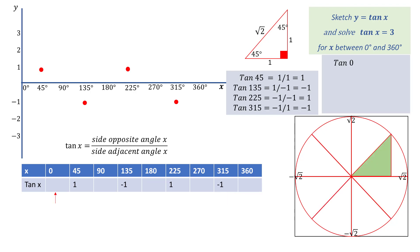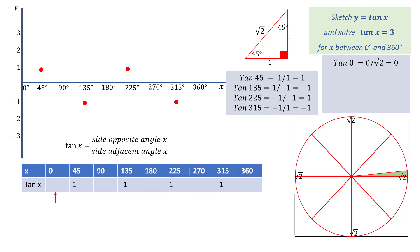Now we find tan of 0 degrees, starting with a right angled triangle in the first quadrant. The wheel is moved clockwise, causing the angle at the centre to approach 0 degrees while still maintaining the right angle. As it does, the side opposite the angle approaches 0 and the adjacent side approaches root 2, so tan of 0 becomes 0 divided by root 2, which is 0, and this is plotted on the graph.